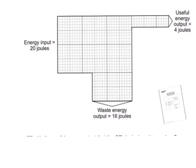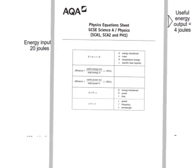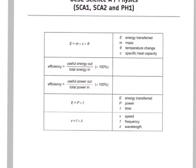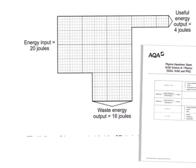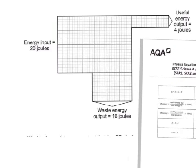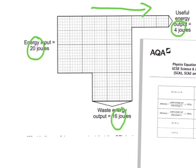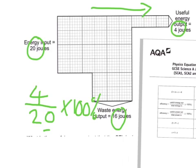Once the Sankey diagram has been drawn, you can calculate the efficiency. This diagram is taken from a past GCSE question. Please remember to use the data sheet — you will find the equations for efficiency there. There are two of them. Efficiency equals useful energy out divided by total energy in. Looking at this example, the useful energy is represented by the vertical arrow, giving us 4 joules. So: 4 divided by 20, times 100%, equals 20%.